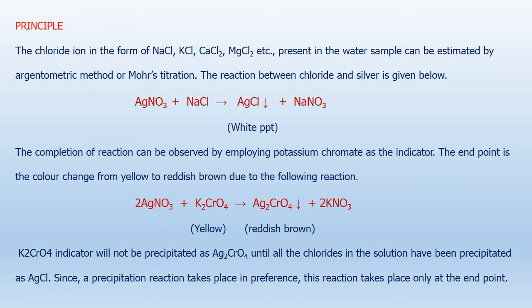If you get a reddish brown tinge in the white precipitate, that is the endpoint. If you continue titrating, more and more silver chromate will form and it will turn dark reddish brown — that is not the endpoint. Just one or two molecules of chromate should react with silver nitrate to give the reddish brown tinge — that is your endpoint.